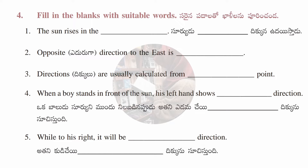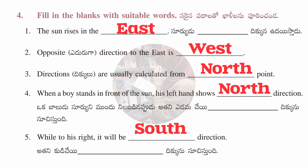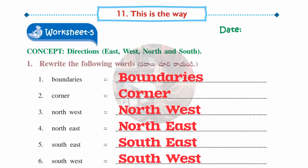Fourth section, fill in the blanks: The sun rises in the east. Opposite direction to east is west. Directions are usually calculated from the north point. When a boy stands in front of the sun, his left hand shows the north direction. To his right it will show the south direction.